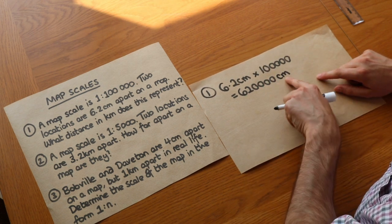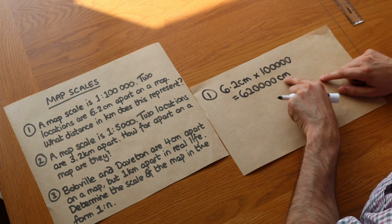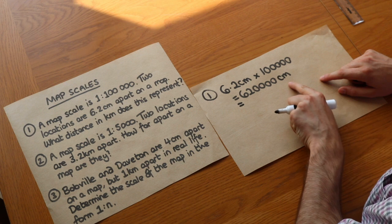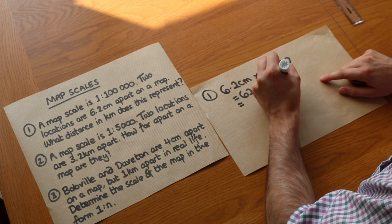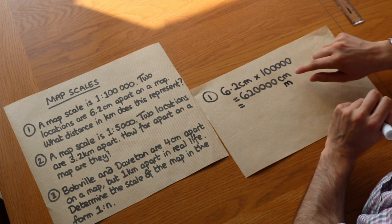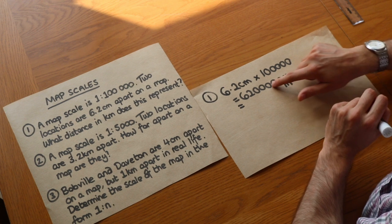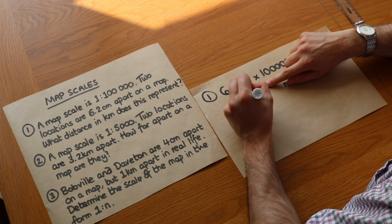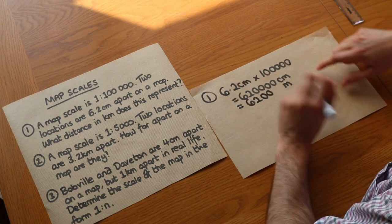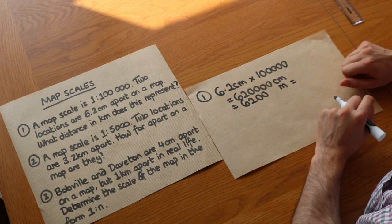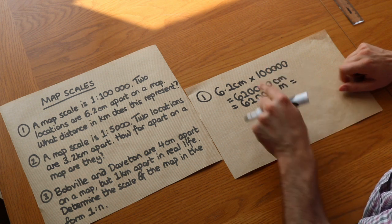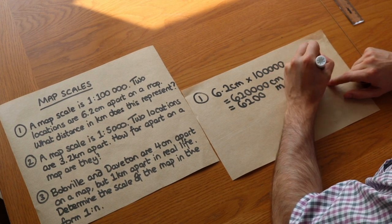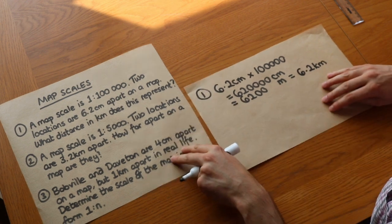But that's not a particularly appropriate unit to use, we want to give this maybe in kilometers. So we can first convert to meters. To get from centimeters to meters, there's a hundred centimeters in a meter, so we divide by 100, that gets rid of two zeros and we get 6,200. Then how many meters in a kilometer? A thousand. So we divide by a thousand and we get 6.2 kilometers.